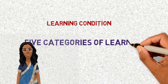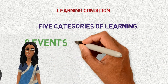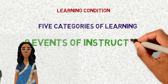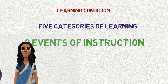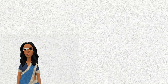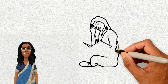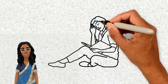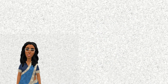Two main components of Gagné's conditions of learning are the five categories of learning and nine events of instruction. Gagné realized that having a learner memorize and recite the seven continents is a different learning outcome than having a learner develop negotiation, influence, and leadership skills. Therefore, he created the five categories of learning, which is a framework for all the different types of learning across many instructional settings.